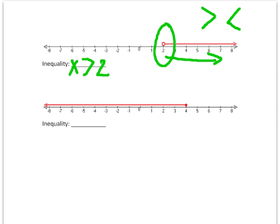The next one shows a closed circle on 4. A closed circle is going to be greater than and equal to or less than or equal to. So I know that my symbol in the middle will have a line on the bottom, and x and 4 will be on the two sides. It's pointing to the left, which means x is less than or equal to 4. Remember to look at the arrows and which way they are pointing, and also do a sanity check — does it make sense?